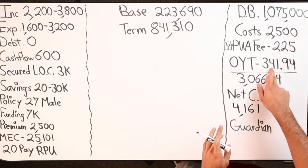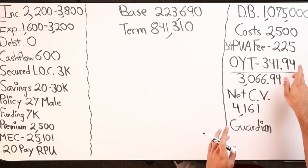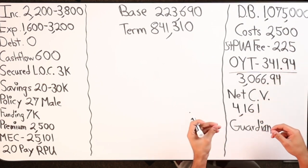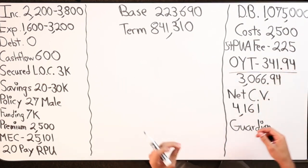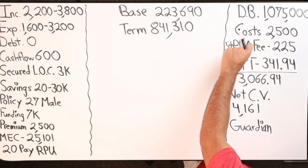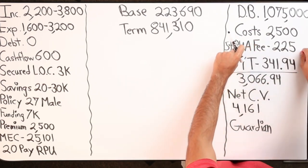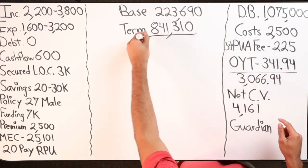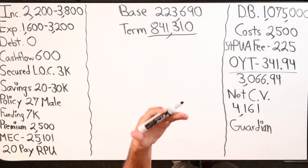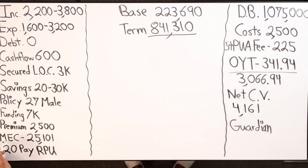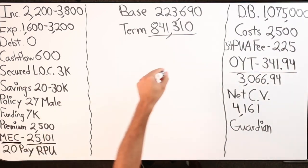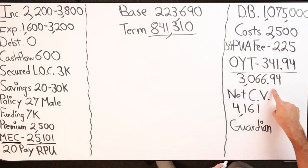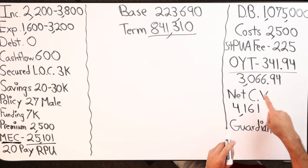And then I've got this $341.94 that's also getting minused from the $4,500. So when the $4,500 goes into the PUA, you have to minus the PUA fee and then you minus the OYT, which covers that term life, which builds up the death benefit, which allows me to have a higher MEC limit so I can actually put more money in. So when you look at it, the total cost is $3,066.94.